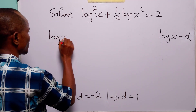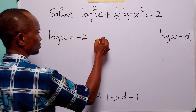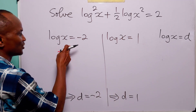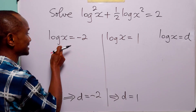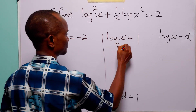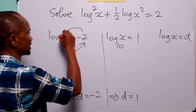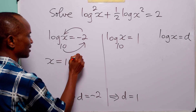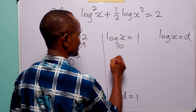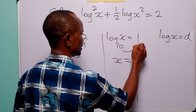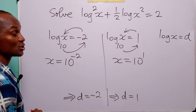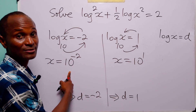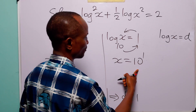So we have that either log x is equal to minus 2 or log x is equal to 1. When we have a statement like this, it simply means that the base of the logarithm — which in this case is 10 — raised to this power is equal to x. So x is equal to 10 to the power 1, and the two values of x are x = 10 to the power minus 2 and x = 10.